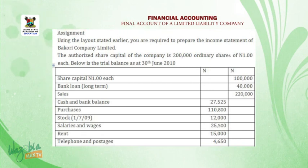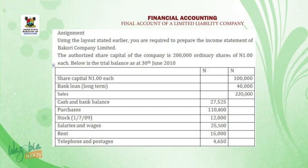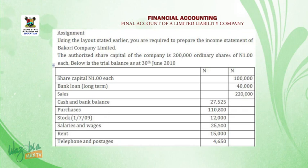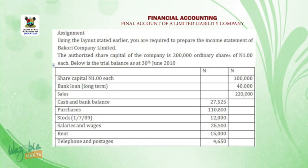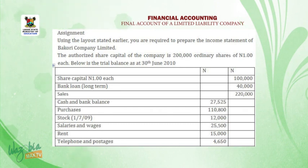Draw your trial balance with columns for date, particulars, folio, debit, and credit. The following items go in the credit column: share capital (1 naira each) — 100,000; bank loan long term — 40,000; sales — 220,000. The following go in the debit column: cash and bank balances — 27,525; purchases — 110,800; stock at beginning — 12,000; salaries and wages — 25,500; rent — 15,000.